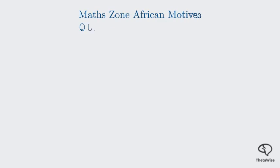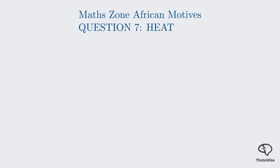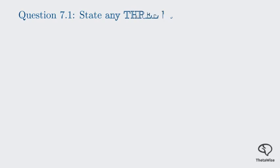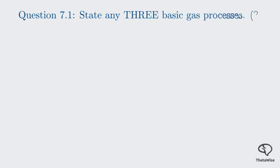So let's get started with our first question. Question 7.1 asks: state any three basic gas processes. This is a theoretical question worth three marks, meaning we need to provide three distinct processes to get full credit.